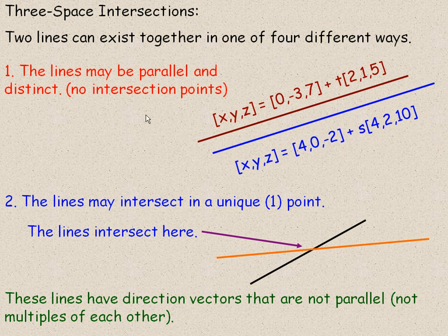So for example, here's two lines that are parallel and distinct. Notice that the direction vectors 2, 1, 5, and 4, 2, 10 are multiples. If you take this direction vector and multiply by 2, you get this one. It's true that this point is not a point on this line, and this point is not a point on that line, so they're parallel. And we could show that. You'll see some stuff like that in the examples.